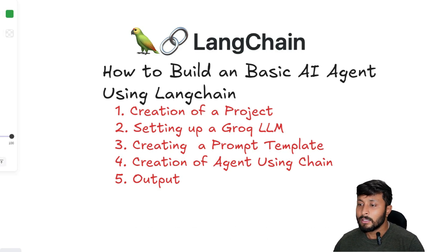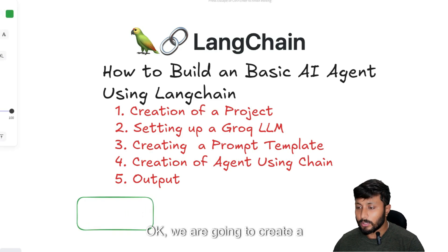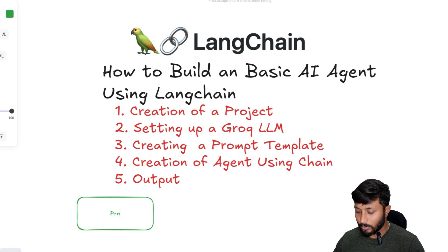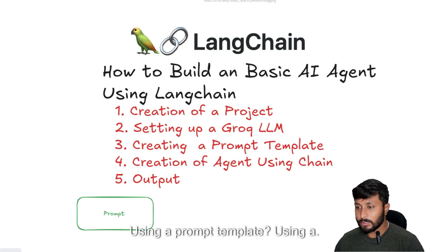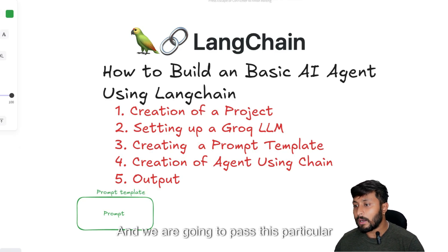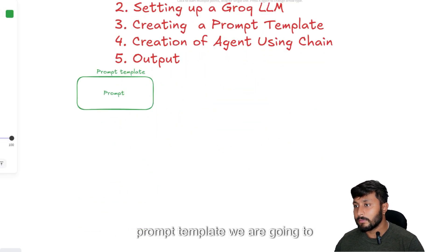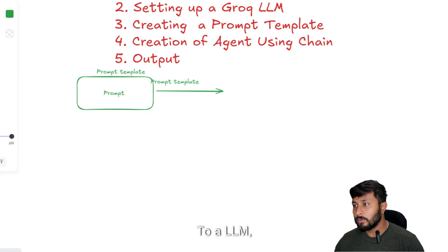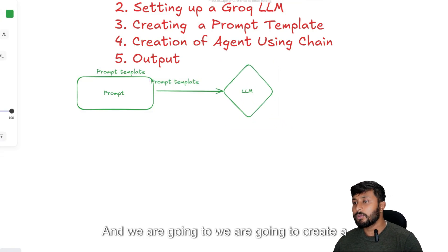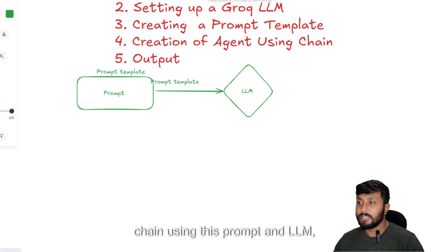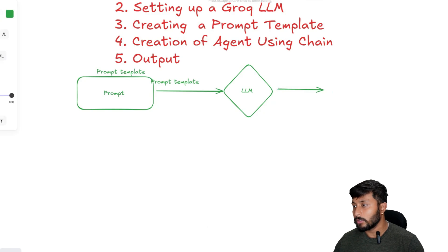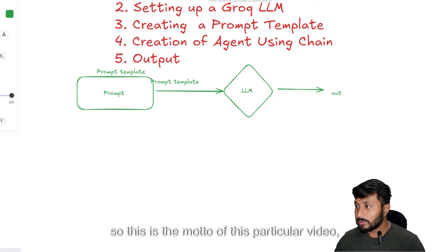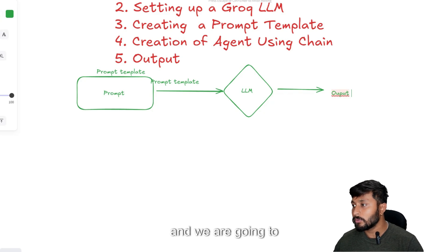So before moving into the code, let me give you a highlight. We are going to create a prompt using a prompt template, and we are going to pass this prompt template to an LLM. Then we are going to create a chain using this prompt and LLM, and get the output.